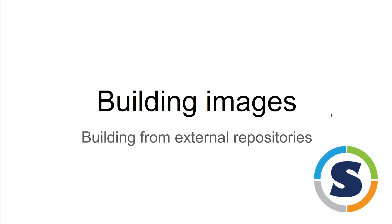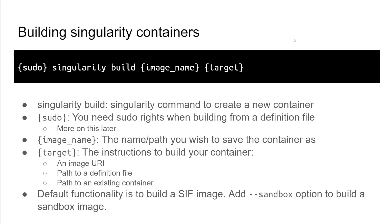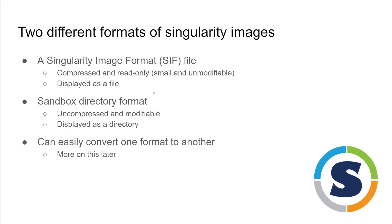We'll be going over how to build containers using Singularity, specifically building from external repositories. There are two different types of image formats you should be aware of. The Singularity Image Format, or SIF files, are compressed and read-only — unmodifiable — and appear as files in the file system. The sandbox directory format is uncompressed and modifiable, and appears as a directory. It's easy to create one format from another.